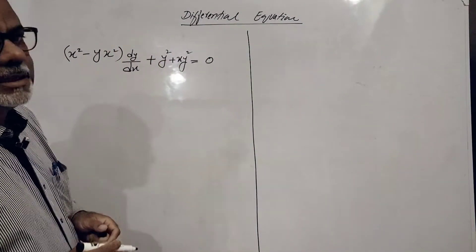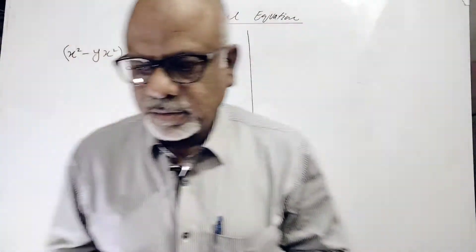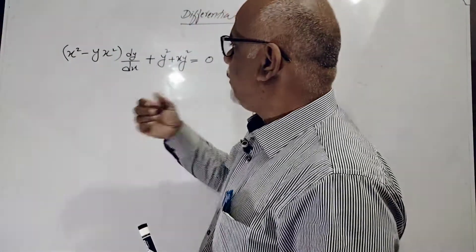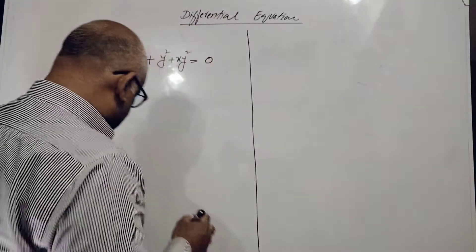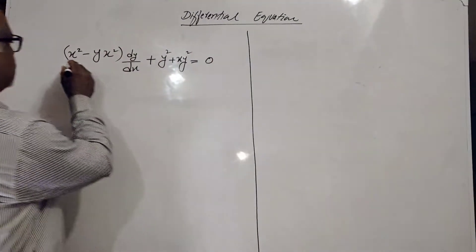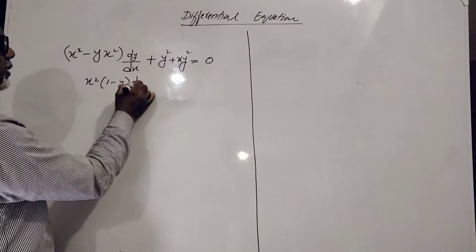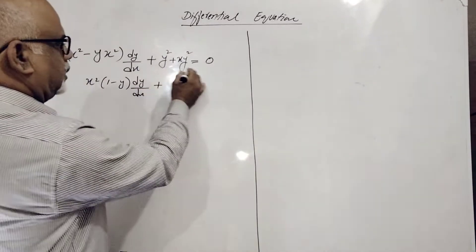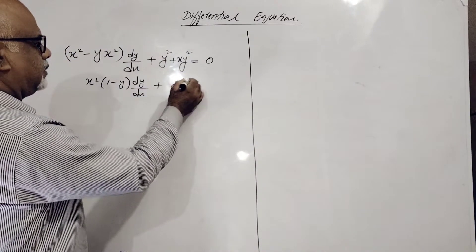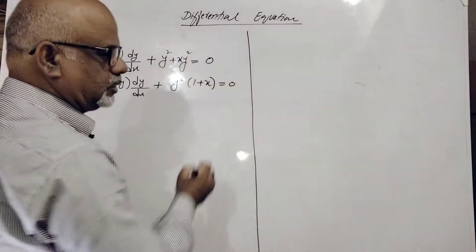We have to use the same strategy here. First, we have to write down the equation as f of x with dx and f of y with dy. So we have to take out the common: x squared times (1 minus y), dy upon dx. Then take out y squared common, giving (1 plus x) equal to 0.